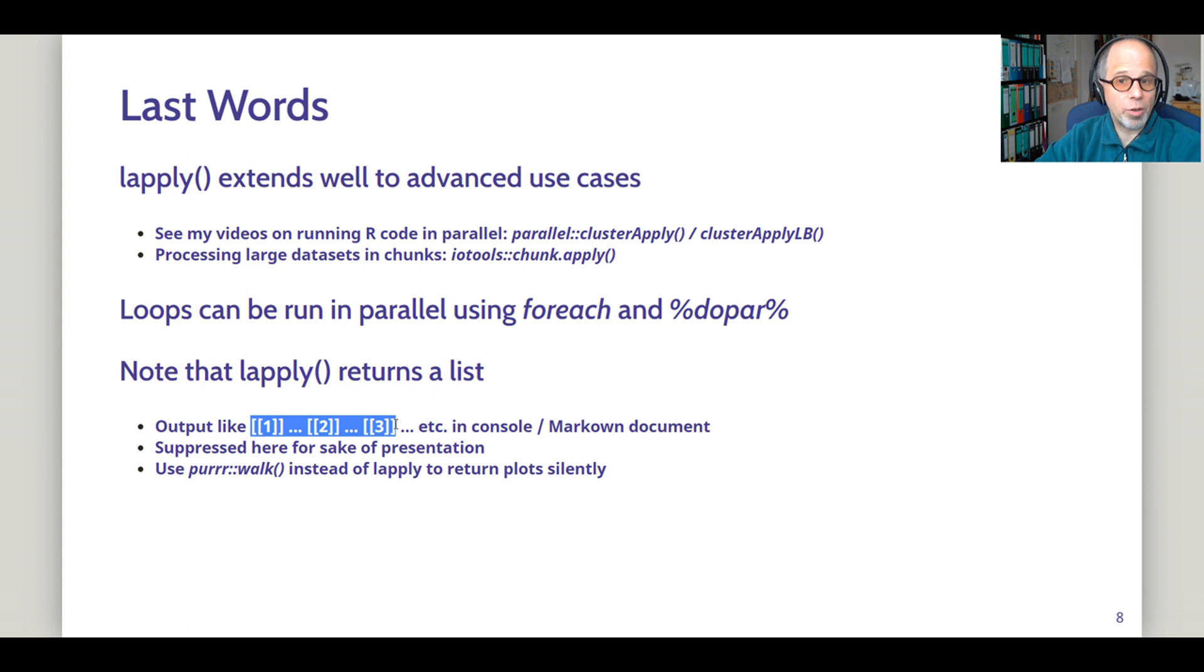The more elegant or cleaner way of suppressing this list output is to use the walk function from the purrr package. You just replace the lapply call with the call to the walk function. But note that for walk, the same holds true that we saw in the for loop. You need an explicit print statement then to actually show the plot.